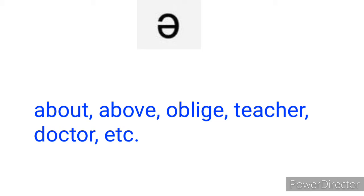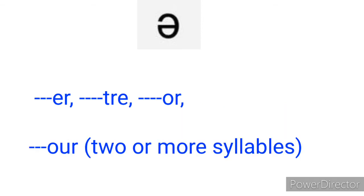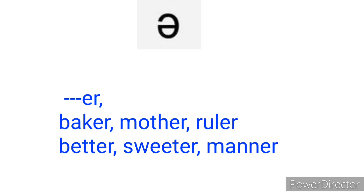Now let's learn the tips that will help us identify the schwa sound in words. The schwa sound occurs in words that end in 'er', 'tre', or 'or'. Let's see words that end in 'er': becker, mother, ruler, better, sweeter, many. The ends of these words are pronounced 'er' — that is the schwa sound.